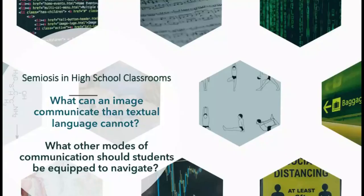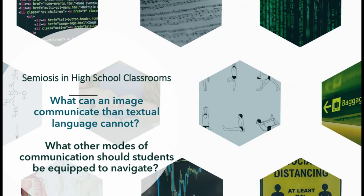Semiosis in high school classrooms — the questions we can ask ourselves when thinking about integrating this: what can an image communicate that textual language cannot? What other modes of communication should students be equipped to navigate? I've included visuals of various text-based and pictorial content, and you can see even with the spatial patterning — organic chemistry formulations, musical notes — there's all kinds of mode navigation that students may not naturally come by and will need instruction for.